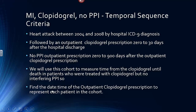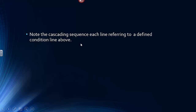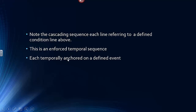We have to find the date-time of the outpatient clopidogrel prescription to represent each patient of the cohort. Since we're going to measure elapsed time from the outpatient clopidogrel, we must make sure we're identifying that date-time in our creation of the cohort. Note the cascading sequence — each line referring to a defined condition line above. This is an enforced temporal sequence, each temporally anchored on a defined event.